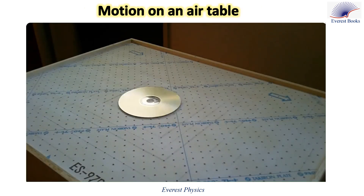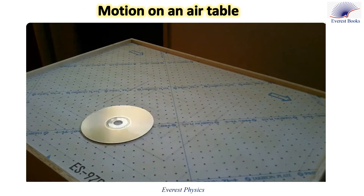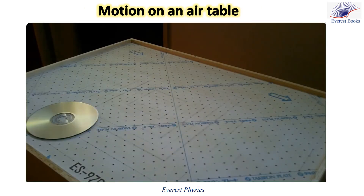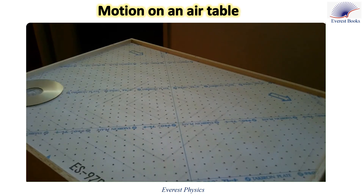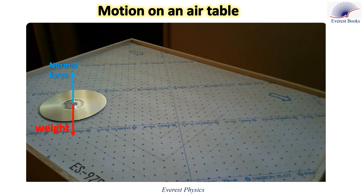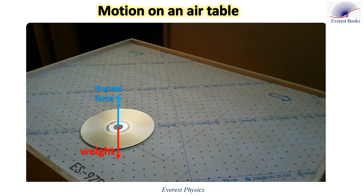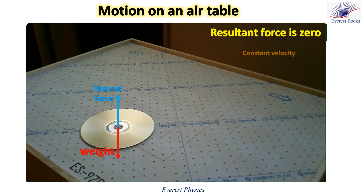Why does the disk move with constant velocity along a horizontal air table? Between two consecutive collisions, the normal force acting on the disk and its weight balance each other. According to Newton's first law, the disk moves with constant velocity.